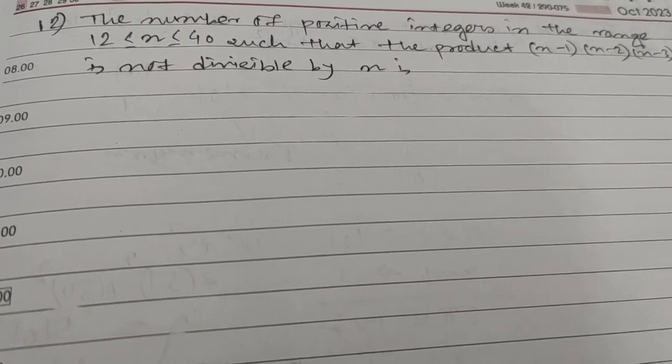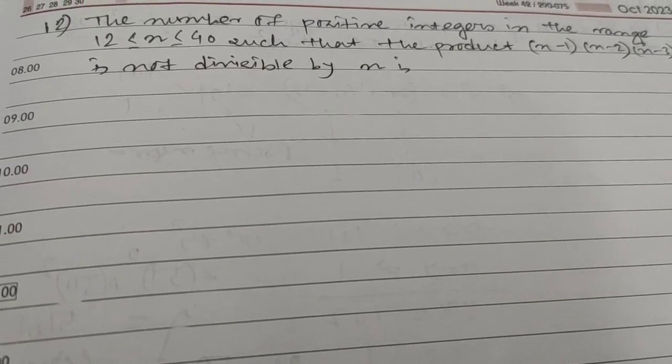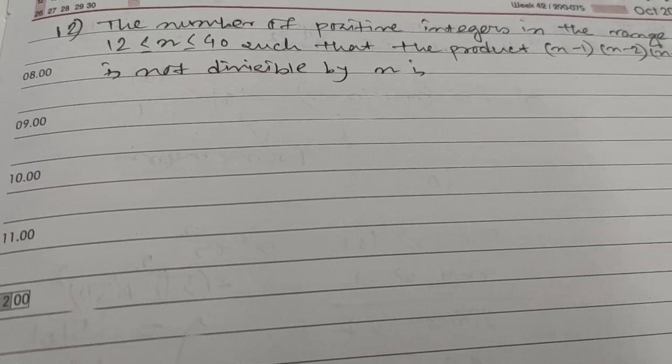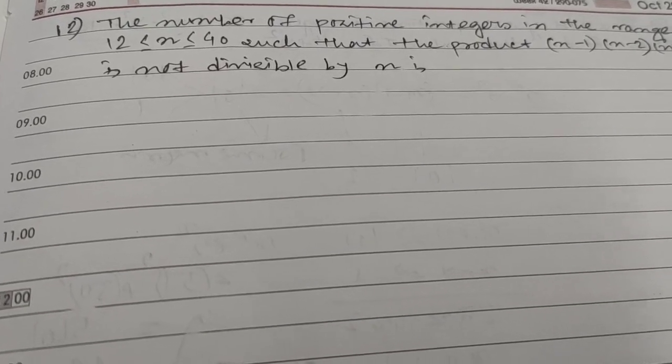Hi friends and students, this is question number 12 for number properties. The question is: the number of positive integers in the range 12 ≤ n ≤ 40